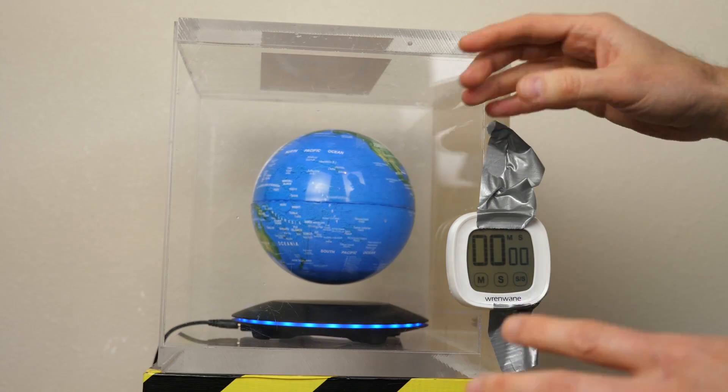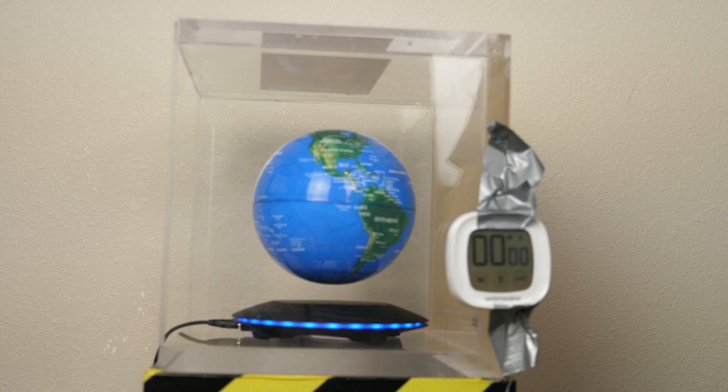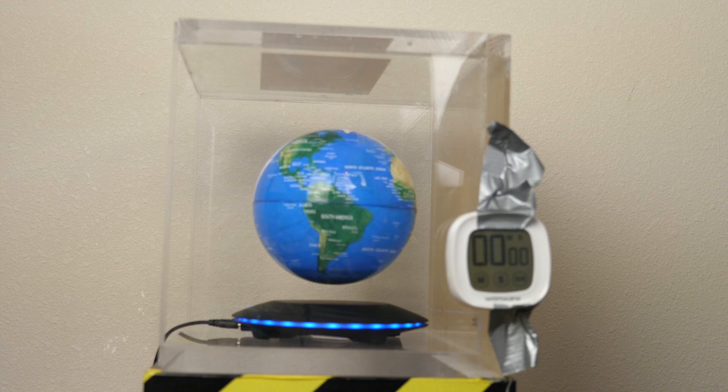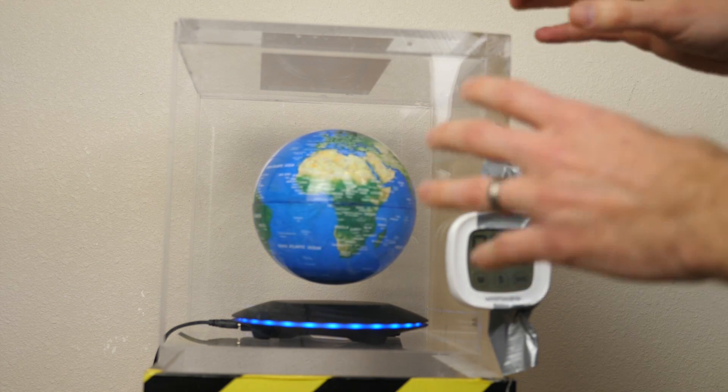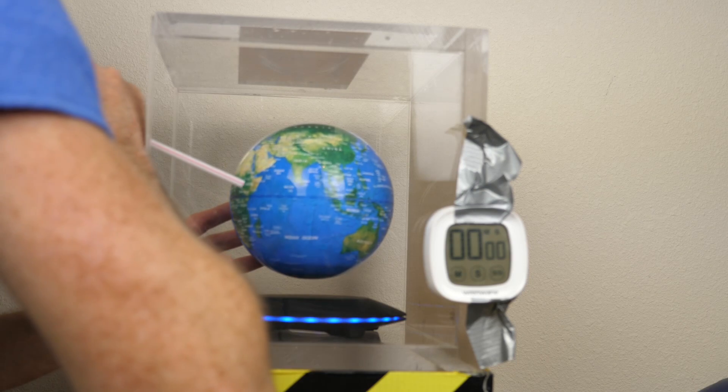So first, before we put it in the vacuum chamber, let's see how long it takes to start spinning at one and a half revolutions per second and then get down to a half a revolution per second. So I'm just going to blow some air on it to start spinning and let's see how long it takes to get to a half a revolution per second.